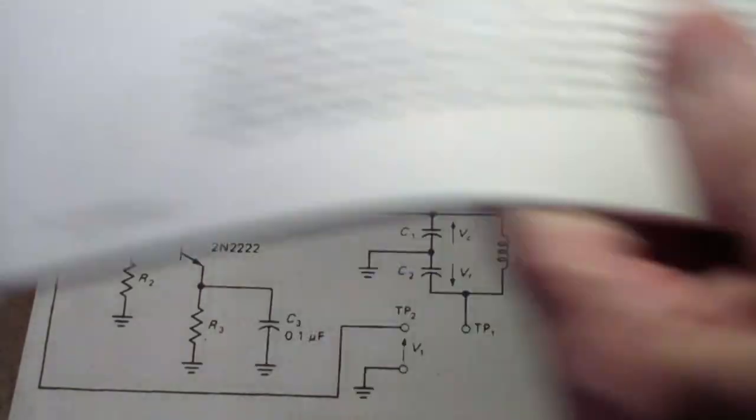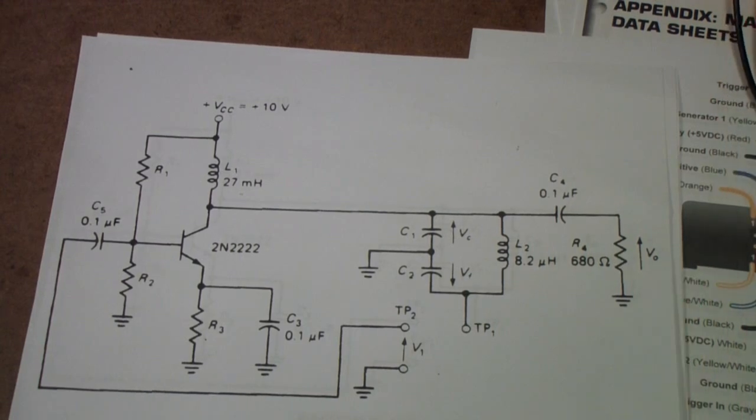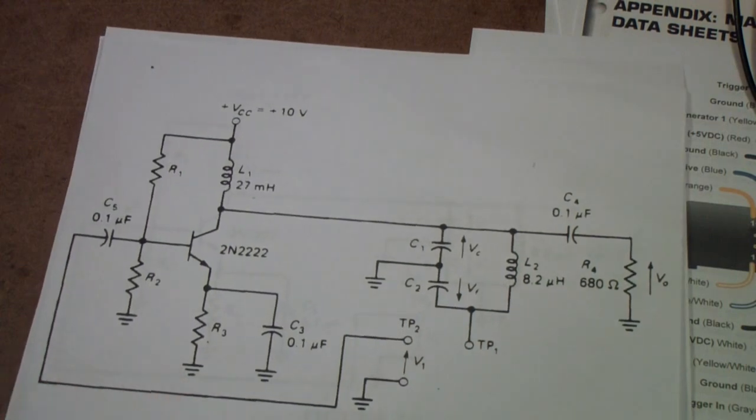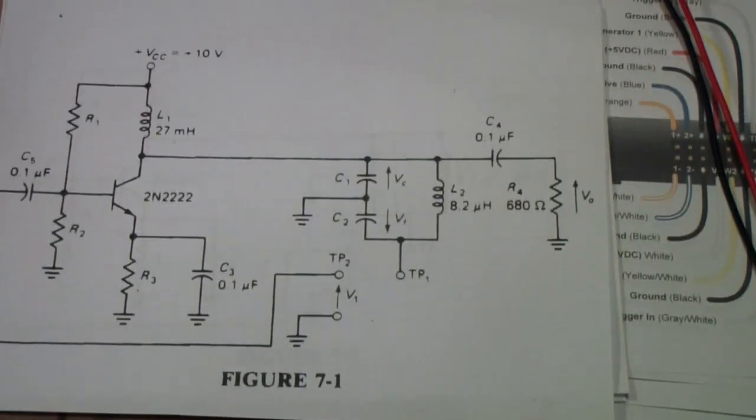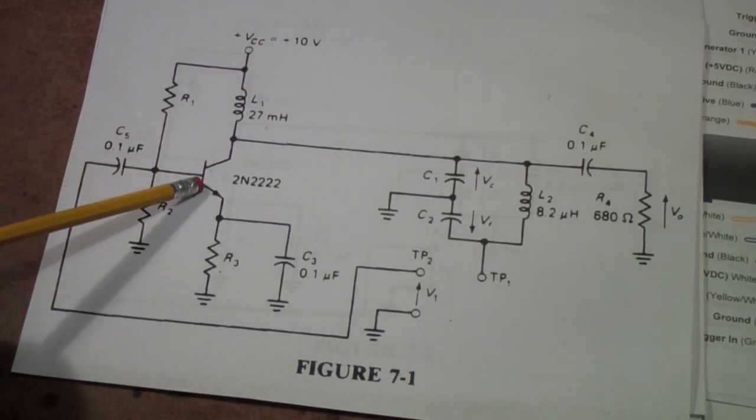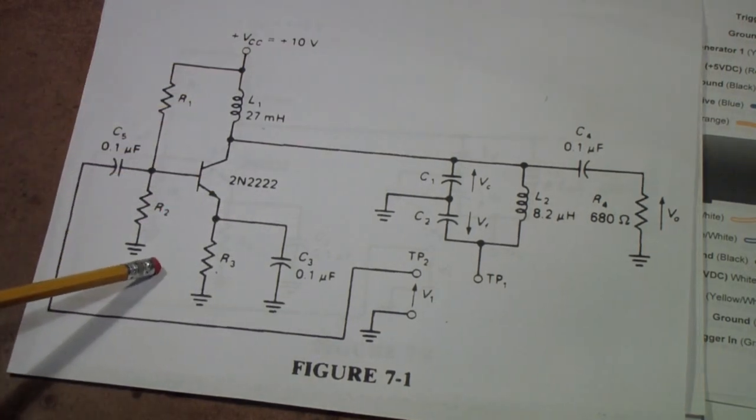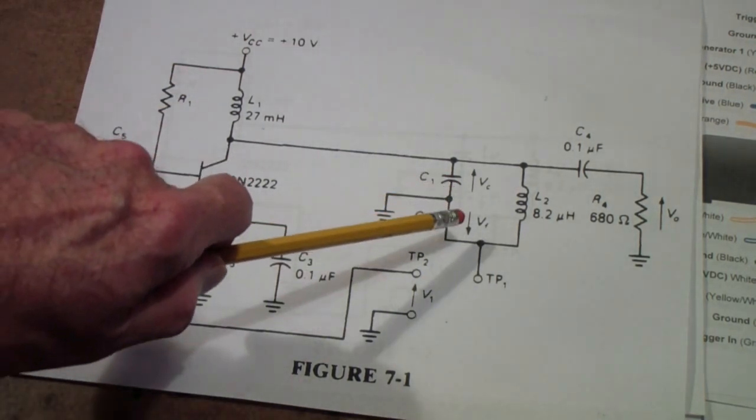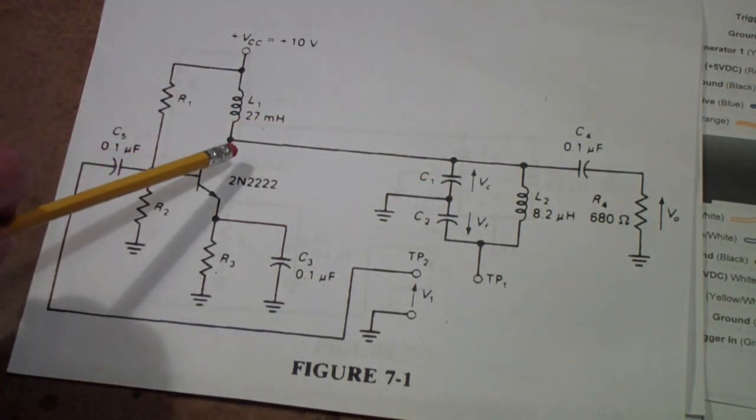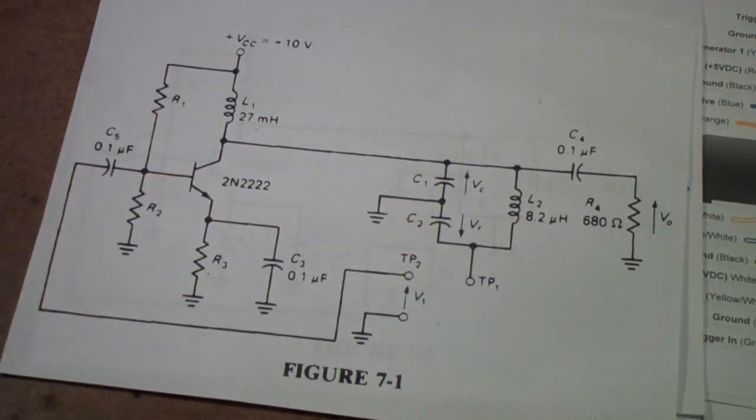While the circuit itself may seem relatively simple, it has the elements of much of what someone learns in doing electrical engineering or electronic engineering. For example, from this circuit you can learn how transistors amplify, how to design a bias circuit. You can also learn about filters, about resonance, and about amplification and oscillation criteria.